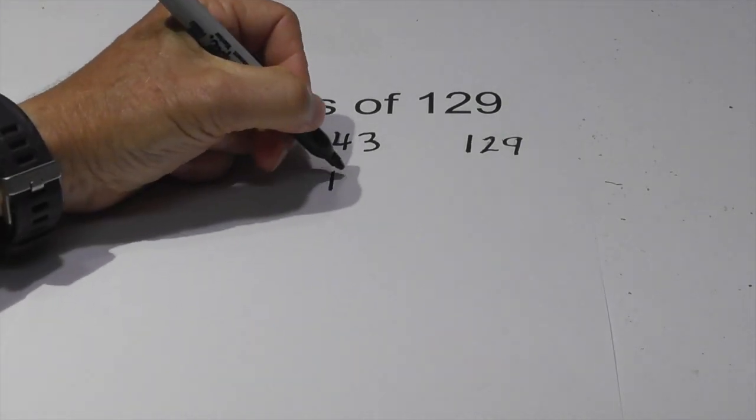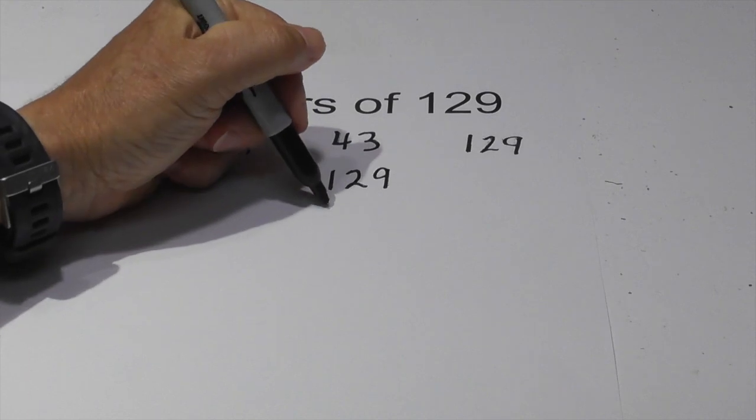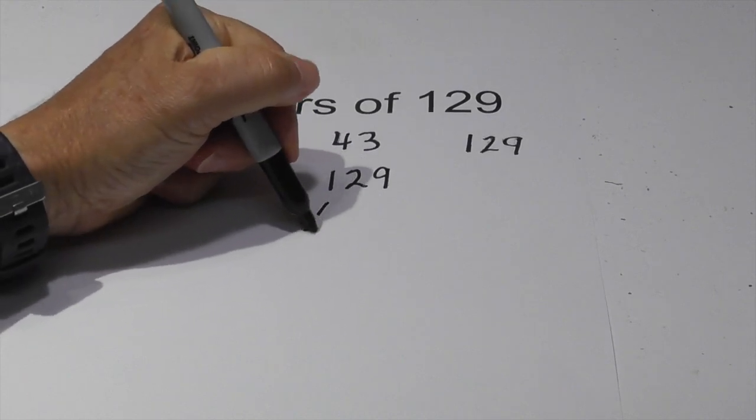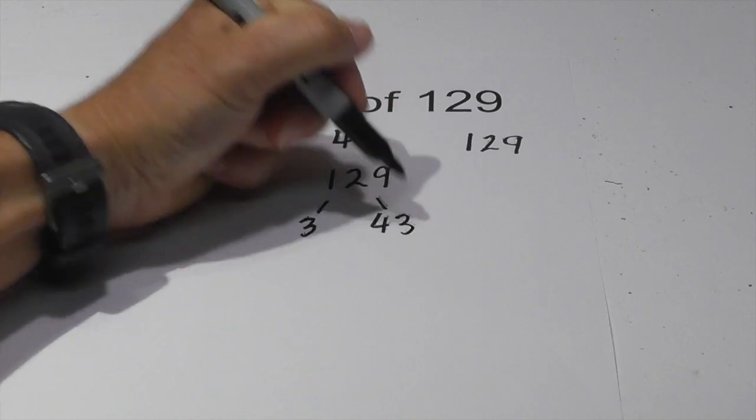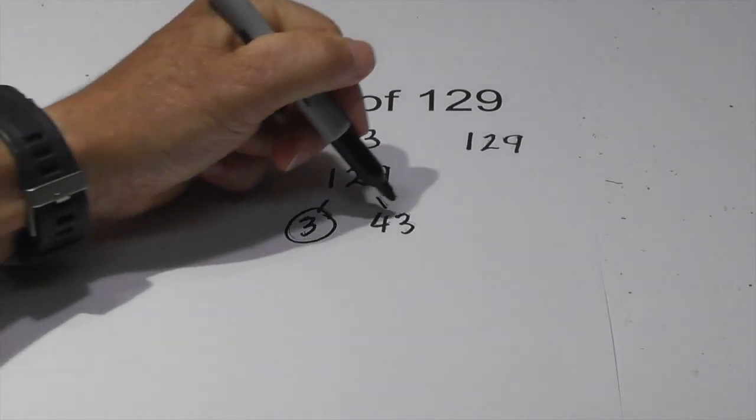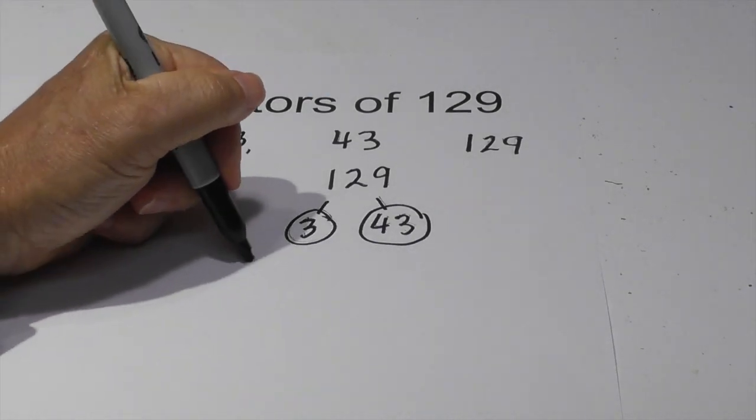Now let's create a factor tree and as you know this will probably not take very long. 3 goes into 129, 43 times. They are both prime numbers so I will circle them so the prime factorization of 129 is 3 and 43.